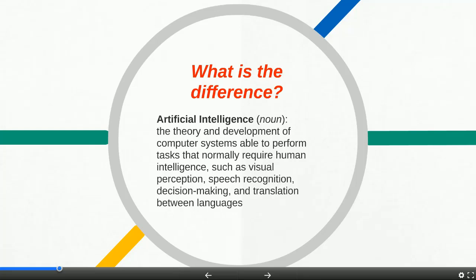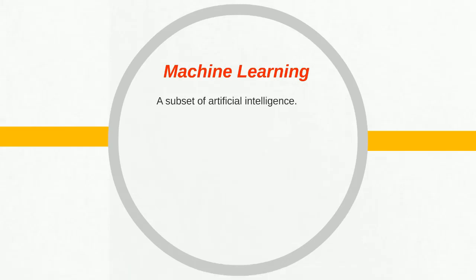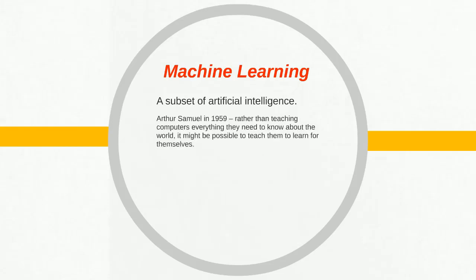Let's contrast that with machine learning. Machine learning can really be defined as a subset of artificial intelligence because it's often used to accomplish tasks like speech recognition — it's a computer program used to do AI tasks. In 1959, Arthur Samuel was credited with the idea for machine learning. He decided we could teach computers how to learn instead of trying to give them a large rule set or teach them every single thing they need to know about the world, more similar to how you and I think.